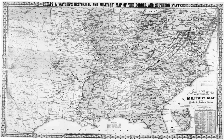Of the states that were exempted from the proclamation, Maryland, Missouri, Tennessee, and West Virginia abolished slavery before the war ended. However, Delaware and Kentucky did not abolish slavery until December 1865, when the Thirteenth Amendment was ratified.